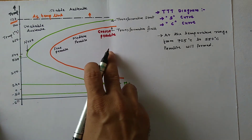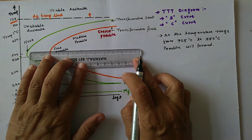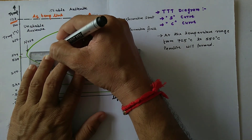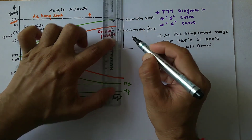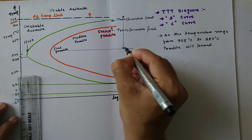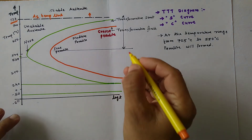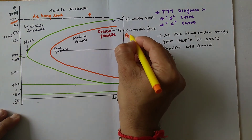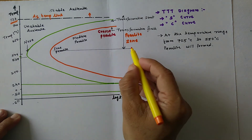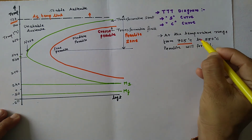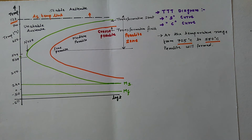So from 550 degrees centigrade down to this line — this region from the A1 line to 550 degrees centigrade is called the pearlite region or pearlite zone, from 705 degrees centigrade to 550 degrees centigrade.